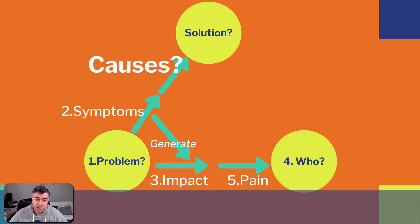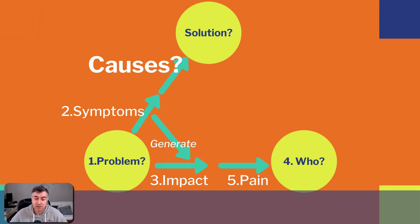Now we must move to the next step, which is to identify the solution that could help this group of people get rid of the pain they are feeling. What we must do here is identify the cause of the symptoms. Because the problem itself — trying to fix the problem — doesn't matter. The problem exists only because it has symptoms that impact some people. So if we find the cause of these symptoms, we can work on a solution to suppress this cause. This is how we follow the next steps of the path to innovation.